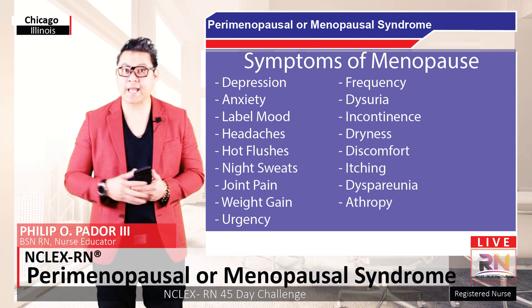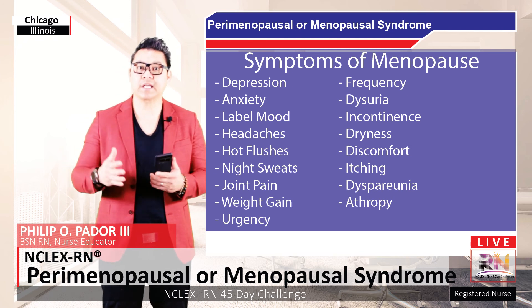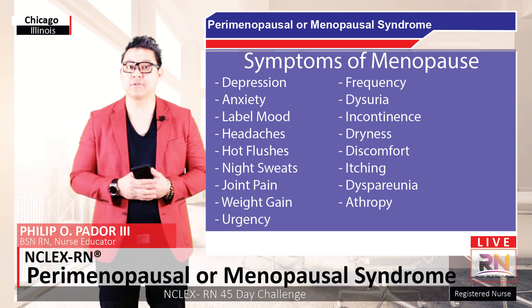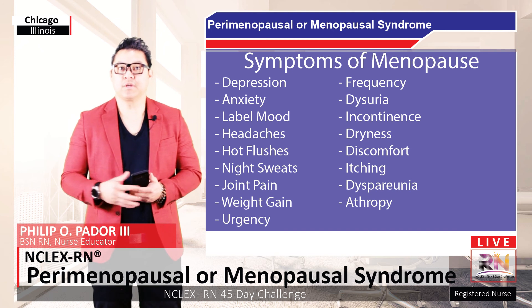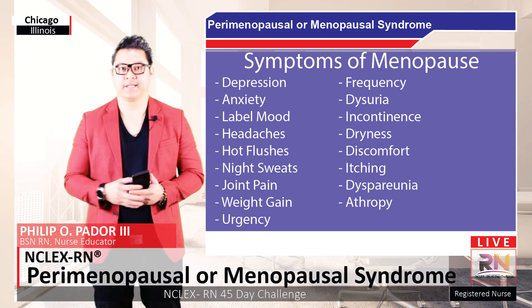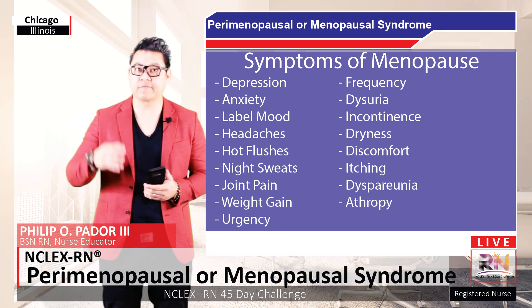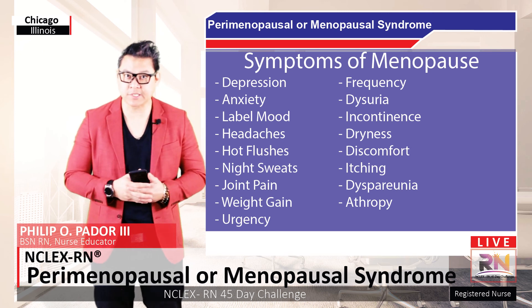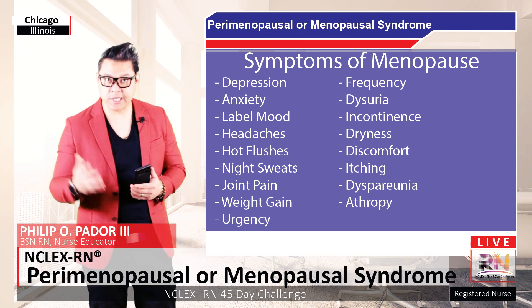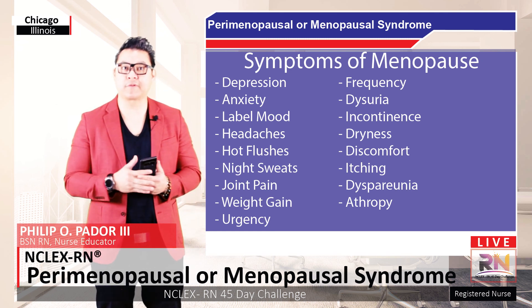Menopause also triggers hot flashes, which involve a sudden feeling of warmth in the face, neck, and chest area lasting about four minutes, and this can trigger night sweats. Other symptoms include pain and weight gain. Urological symptoms include urgency, frequency, dysuria, and incontinence. Vaginal symptoms and signs include dryness — which increases the chances of urinary tract infections and other infections — as well as discomfort, itching, dyspareunia, and vaginal atrophy.